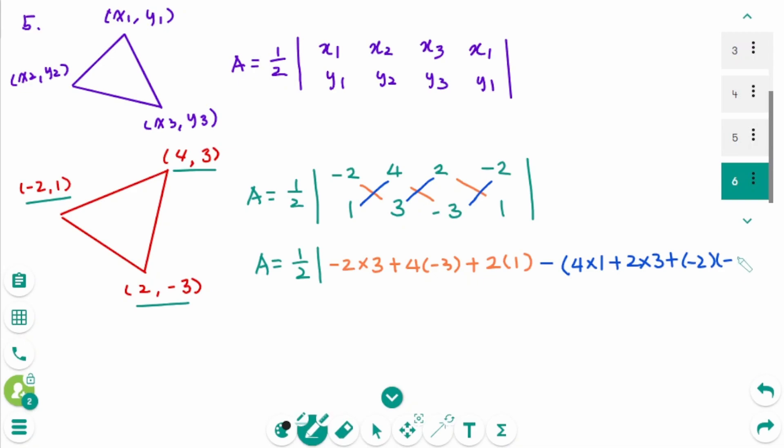Equals 1 over 2 times, minus 6, minus 12, plus 2, minus 4, plus 6, plus another 6. Then cross. Equals 1 over 2 times, open the absolute value sign, this part is minus 16, minus another 16.